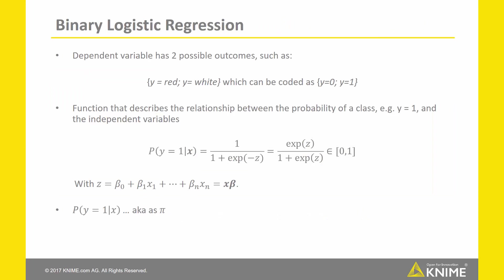Let's confine ourselves for the moment to a binary classification problem. Here, the dependent variable Y has two possible outcomes, which are coded as 0 and 1. We need a function that describes the relationship between the probability of a class and the independent variables. By definition, a probability value always falls between 0 and 1. One such function is 1 divided by 1 plus the exponential function to the power of minus z, for any real number z. In the case of logistic regression, z is taken as the linear combination of all independent variables, and the probability that Y equals the class coded as 1 is commonly abbreviated with pi.